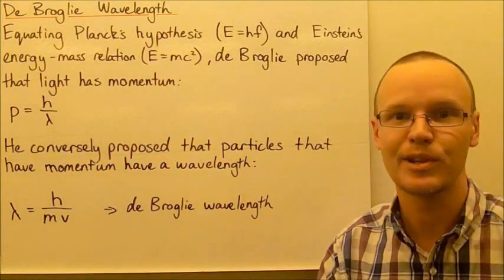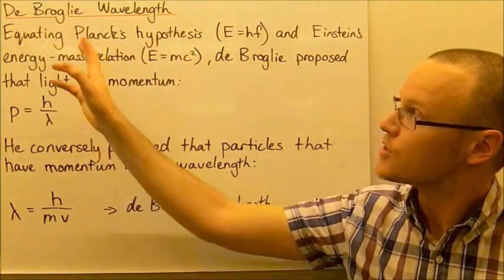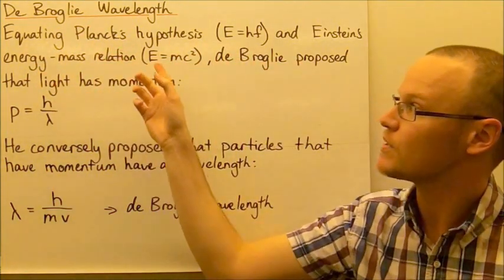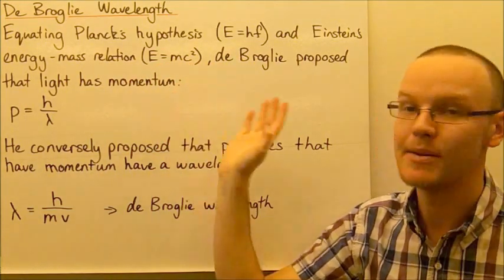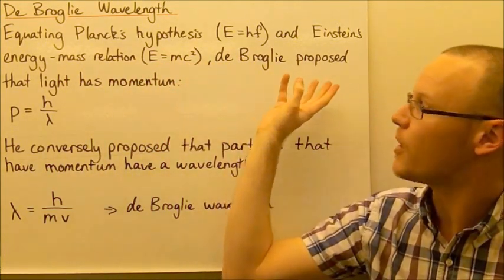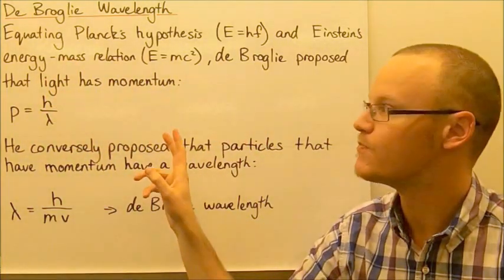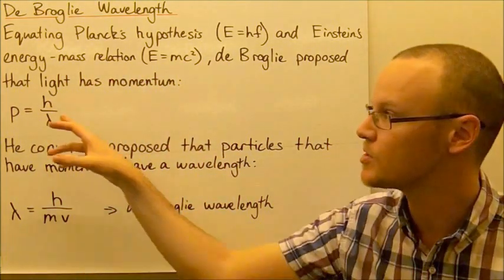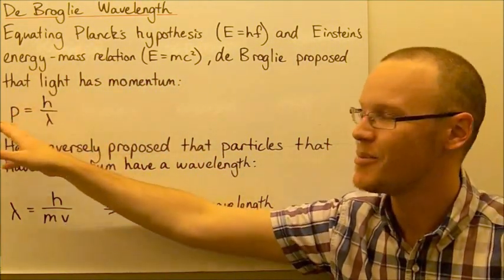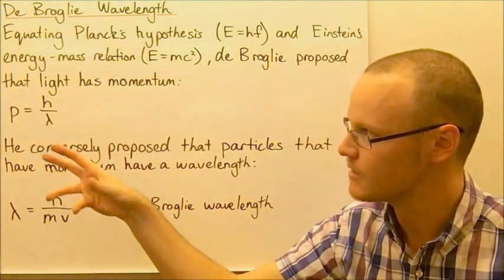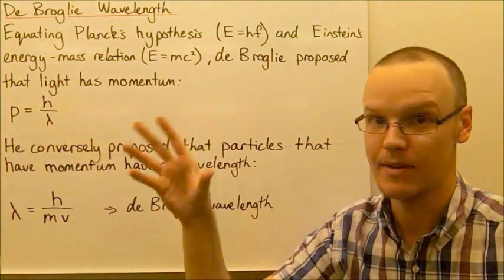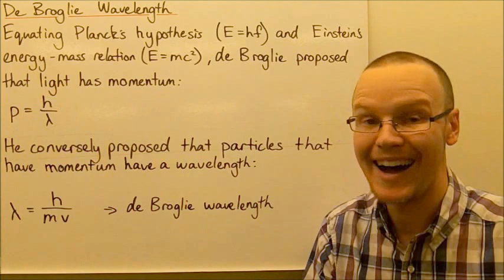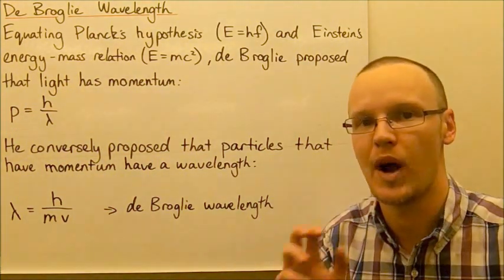Today we're going to be talking about the de Broglie wavelength. Equating Planck's hypothesis E=hf and Einstein's energy-mass relation E=mc², Louis de Broglie proposed that light has momentum. In equating those and working with the variables, he determined that light, having momentum mc even though it is massless, the momentum p equals h divided by the wavelength of the light.